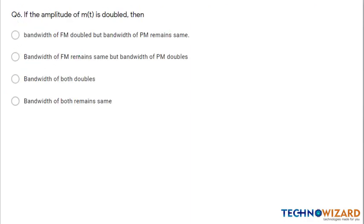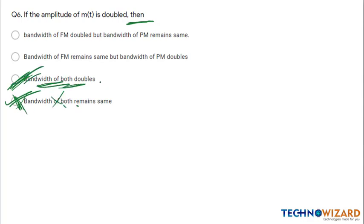Question 6: If the amplitude of m(t) is doubled, the bandwidth of both FM and PM will get doubled. Option C is the correct answer — bandwidth of both frequency modulation and phase modulation will double when the message signal amplitude is doubled.